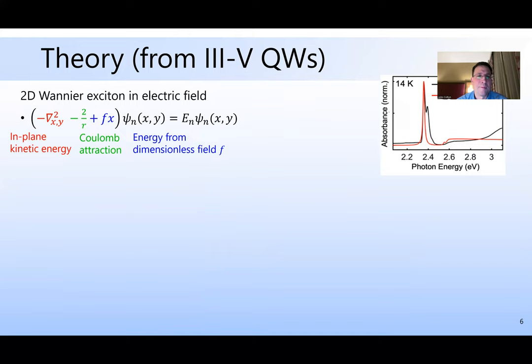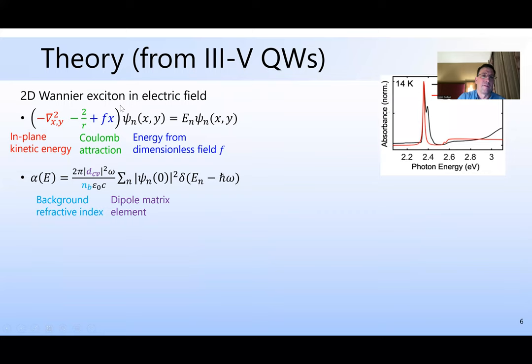Now, the theory we've stolen from 3-5 quantum wells. A 2-D Wannier exciton in an electric field has a Schrodinger equation that looks like this. There are three terms to the Hamiltonian here, the in-plane kinetic energy, the Coulomb attraction between electron and hole, r is the separation distance between the electron and the hole, and then the energy from the field. And I've written this in terms of dimensionless units. Once you solve this equation for the wave function, you plug in r equals zero to get the overlap between electron and hole, and this formula gives you the absorption.